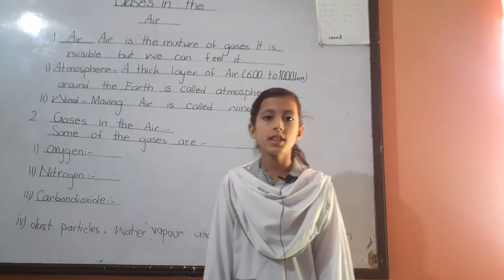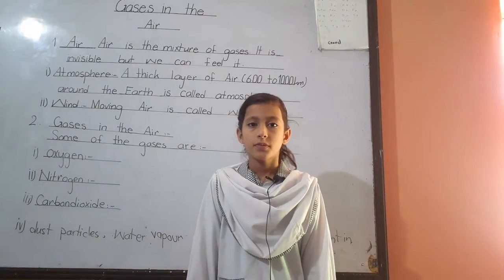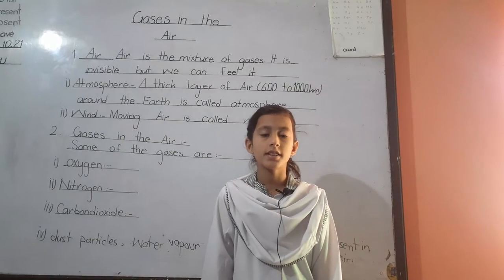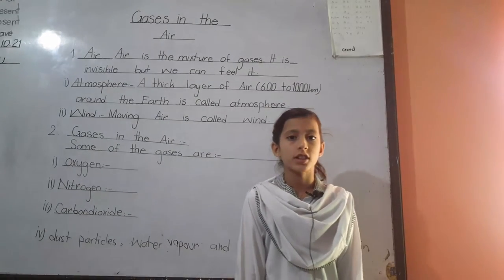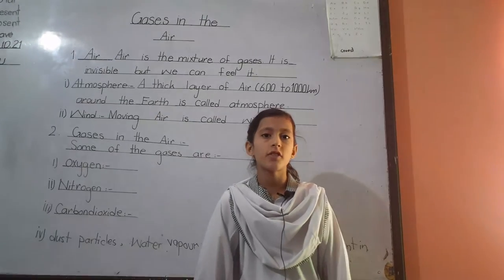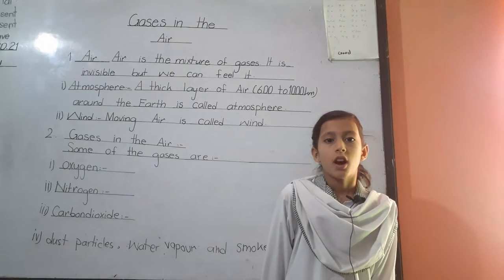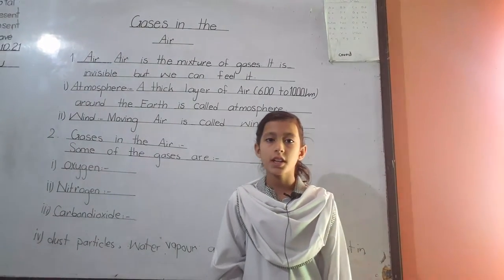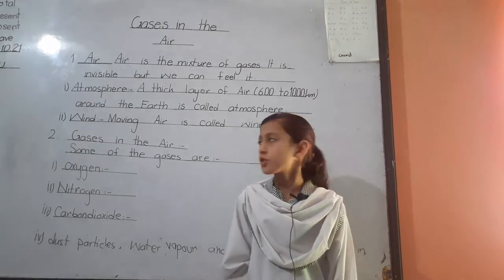Oxygen is very important for living things. About 21% of the air is oxygen. Oxygen is dissolved in water, allowing plants and animals to live in water. Oxygen is also very important for burning, or combustion.